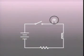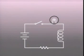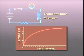If the inductance is small, the transient time will be short. If the inductance increases, the transient time will also increase. The greater the inductance, the longer the transient time.